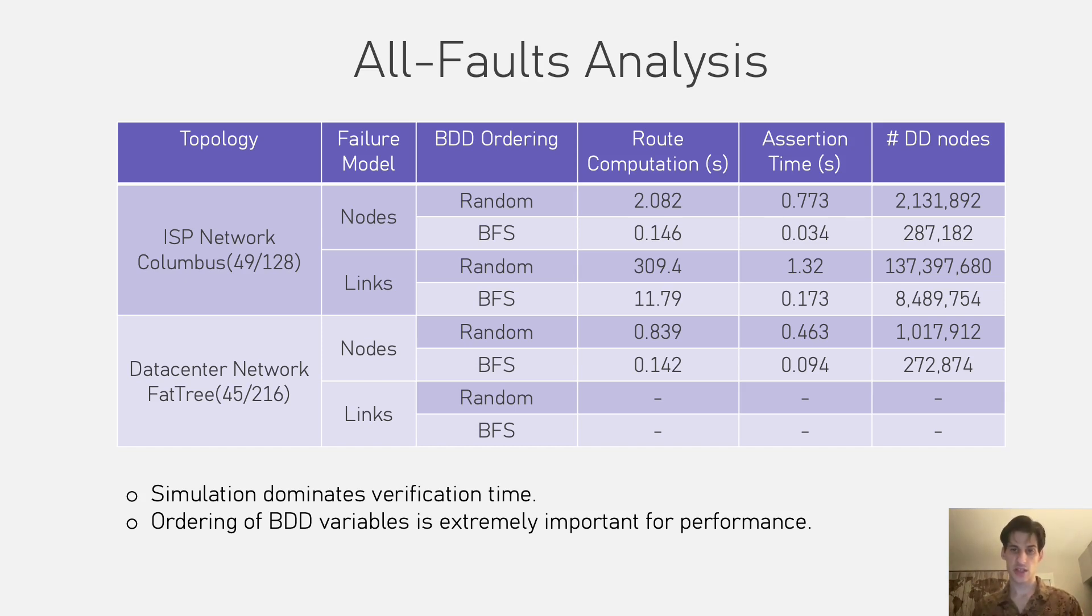You might also notice that for each network and failure model, there are two experiments. The difference is in the ordering of decision nodes we choose. It's well known that picking a bad order can blow up the size of a decision diagram, but there is also no efficient way to find an optimal ordering.